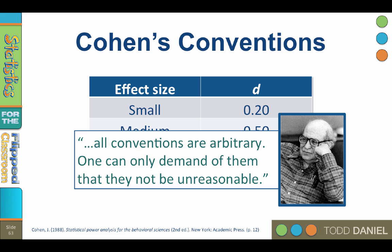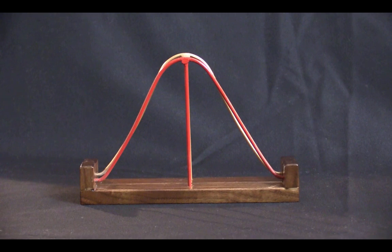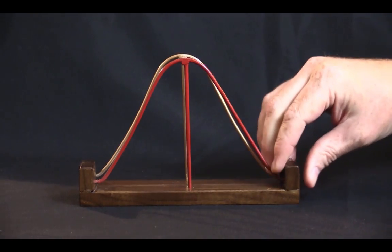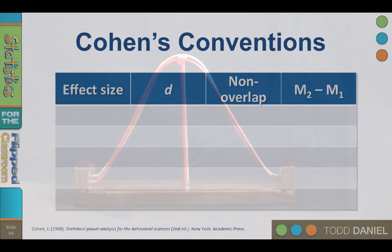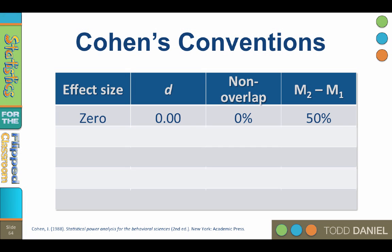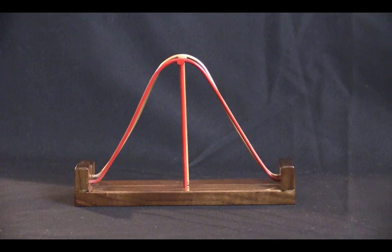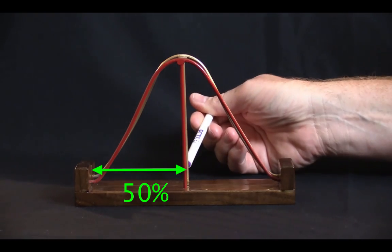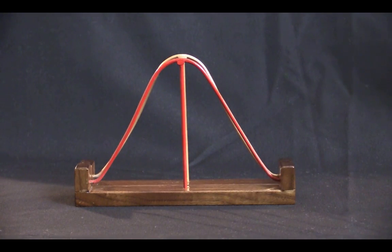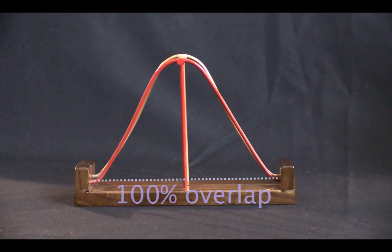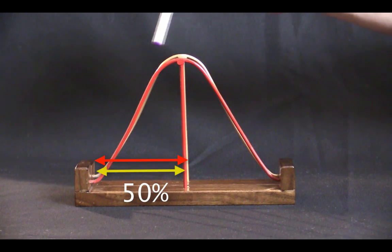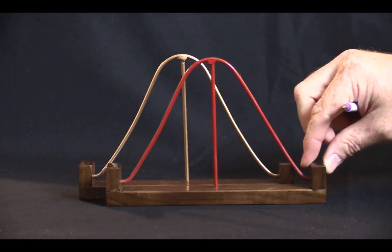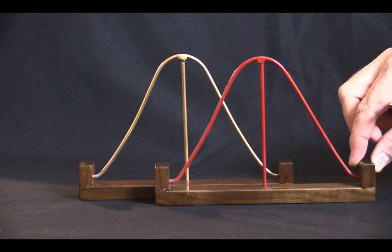Consider that we are comparing two distributions representing group 1 and group 2. When the mean difference is 0, and therefore d equals 0, there is 100% overlap in the distributions. Each mean is higher than 50% of its own distribution — that is what the mean is, the point higher than 50% of the lower half of the distribution. So because there is 100% overlap, each mean is also higher than 50% of the other distribution. But as one mean starts to diverge, the mean difference — the difference between those upright bars — becomes greater, and so d becomes larger.